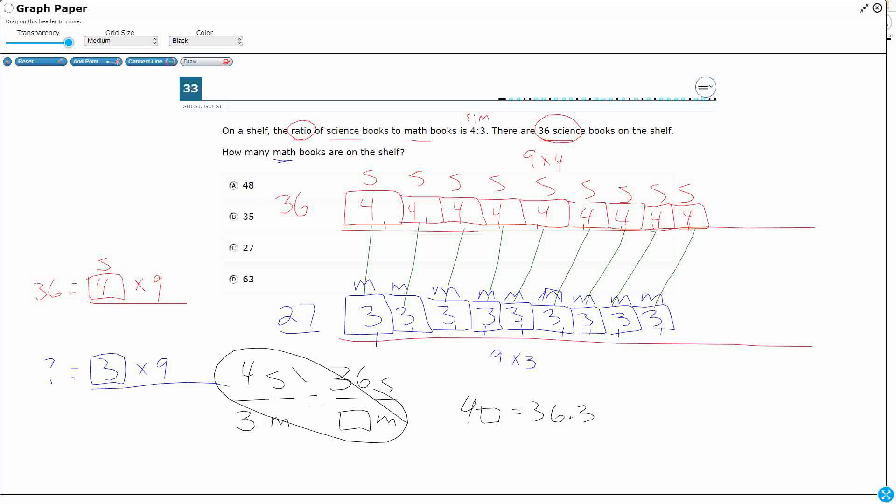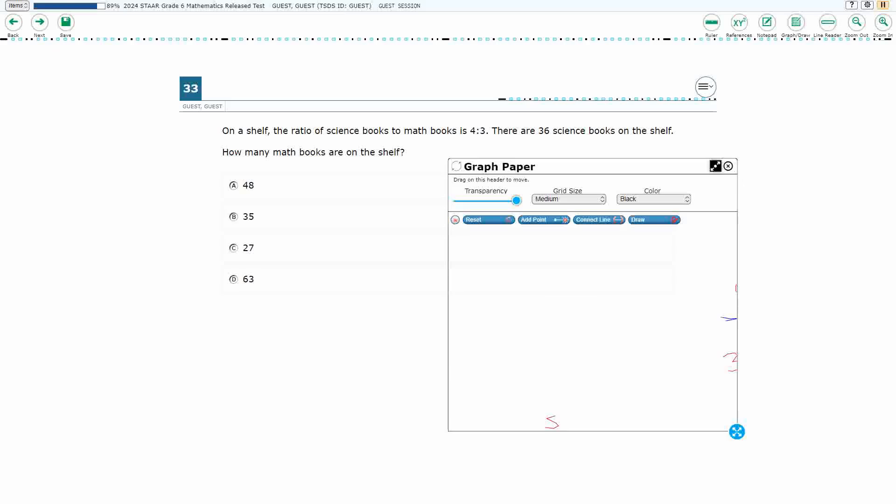Or I could just think, well, how do I get from 4 to 36? Multiply by 9, multiply by 9. There's many different ways to solve this proportion once you set it up correctly. Either way, our answer is going to be C, 27.